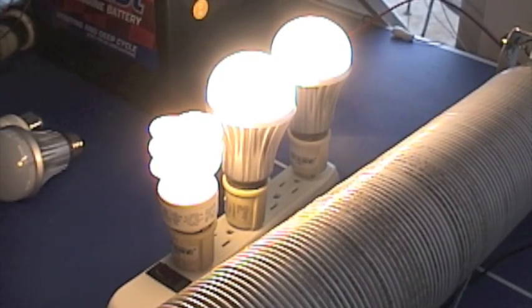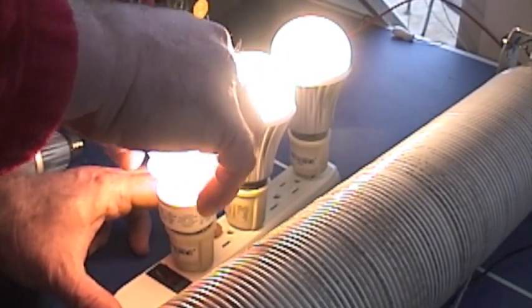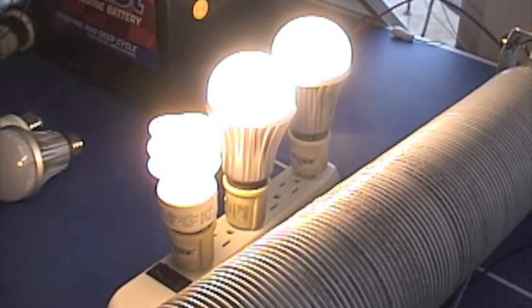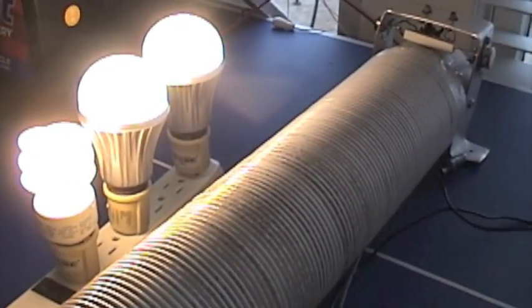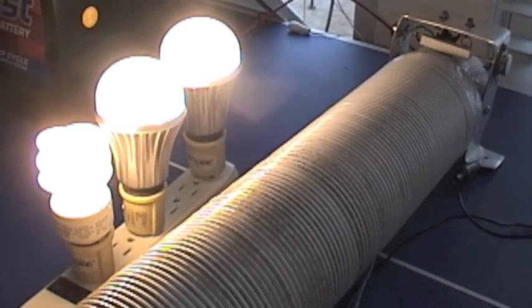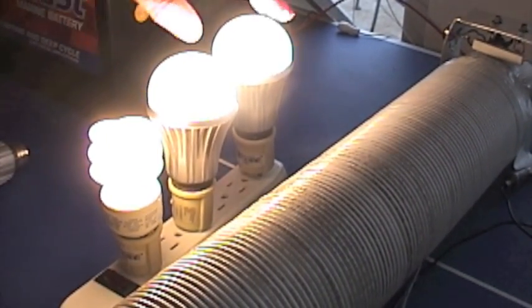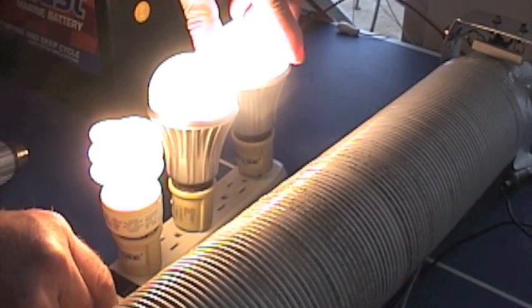You can add up to—we can pull 12 amps off this circuit, so that's about 150 watts we can run. Since these are 7.5 watts each, you can run 20 of these bulbs.